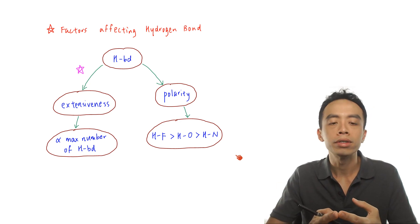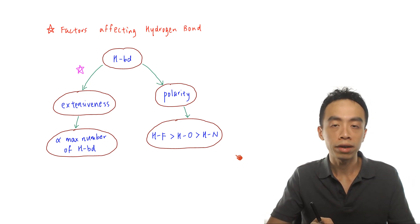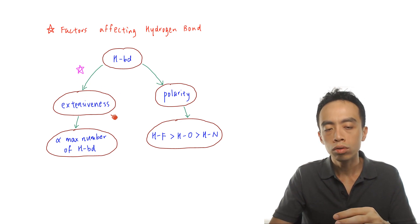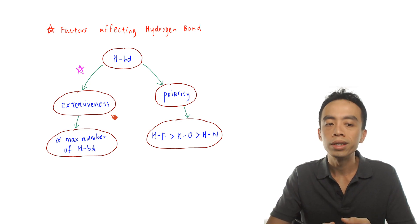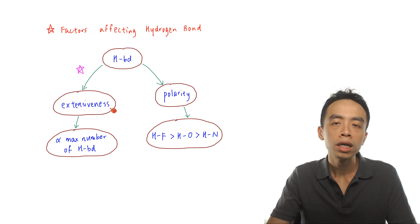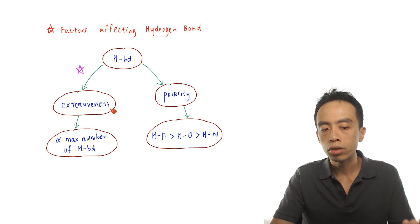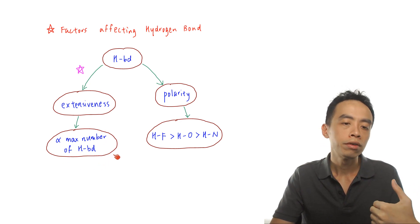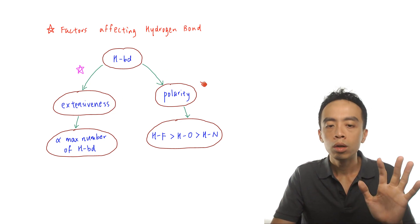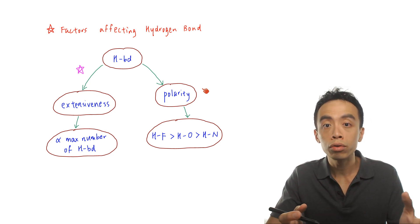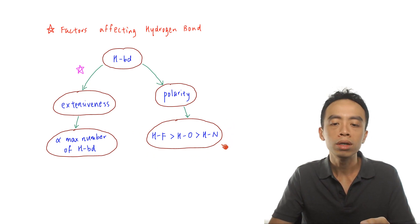Comparing these two factors, we have to know which factor is more important. Extensiveness is actually more important than polarity. So the first thing we have to consider when comparing two molecules which can both form hydrogen bond would be the extensiveness — which molecule can form more extensive hydrogen bond. If the extensiveness is different, then the strength of the hydrogen bond will be based purely on extensiveness. If extensiveness is the same, then we look at polarity: does the molecule contain H-F bond, H-O bond, or H-N bond?